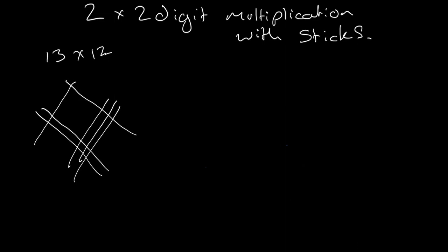Like so, and then the way that you add up the sticks to get your answer is that you take the bottom crossings, then the middle crossings, and then the top crossings, and that becomes your answer.